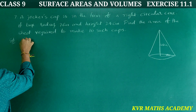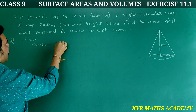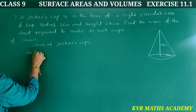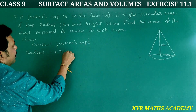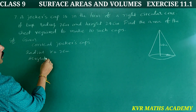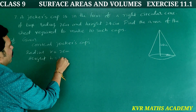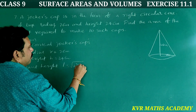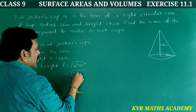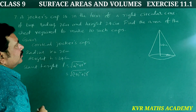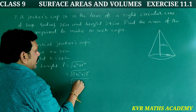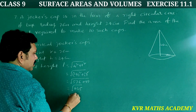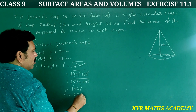Solution — Given: conical joker's cap. Radius r is equal to 7 cm. Height h is equal to 24 cm. Slant height: L is equal to root of (h² + r²), that is root of (24² + 7²), which is root of (576 + 49), that is root of 625, equal to 25. So L is equal to 25 cm — the slant height of the joker's cap.